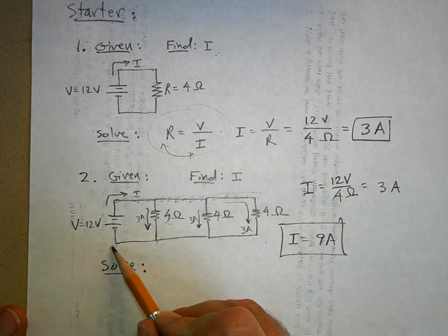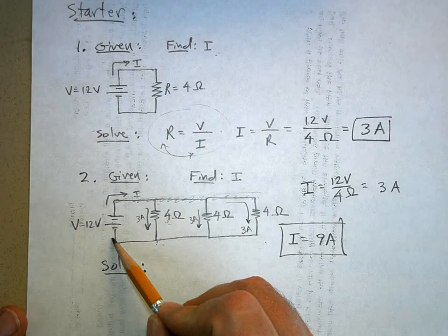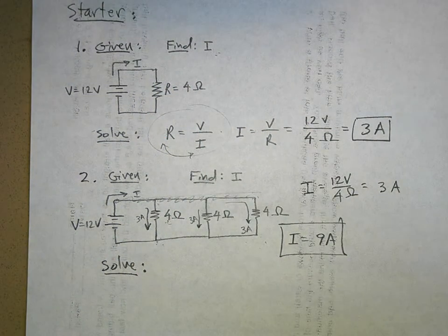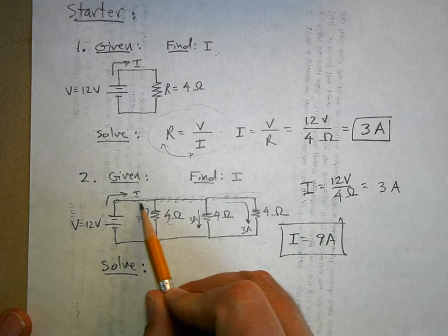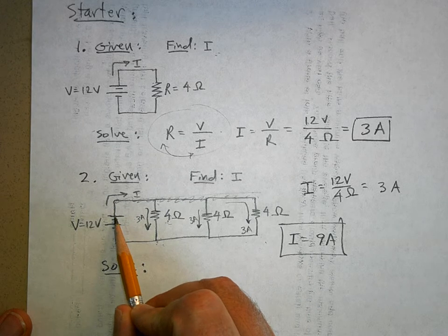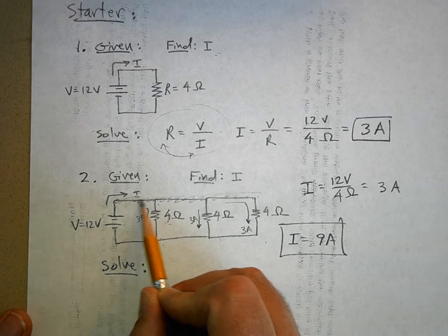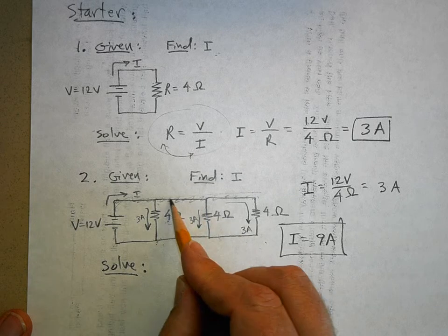Because now the battery, instead of putting out just 3 amps, has to put out 9 amps - three times more. These three currents all have to come from this one wire, so this has to put out 9.